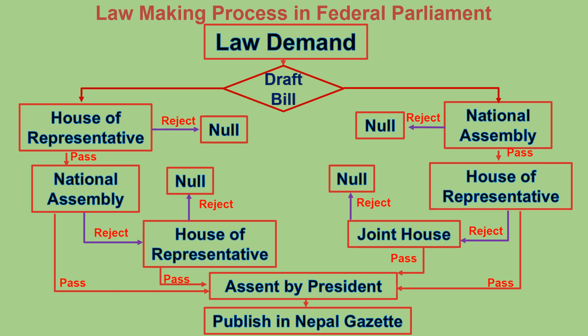If we present the bill in the National Assembly, it passes and is sent to the House of Representatives. The House of Representatives passes it and sends it to the President, who assents to it and it is published in the Nepal Gazette. But if the House of Representatives passes it but the National Assembly rejects it, then it goes back to the House of Representatives. If the House of Representatives passes it again, it is sent to the President and becomes law.